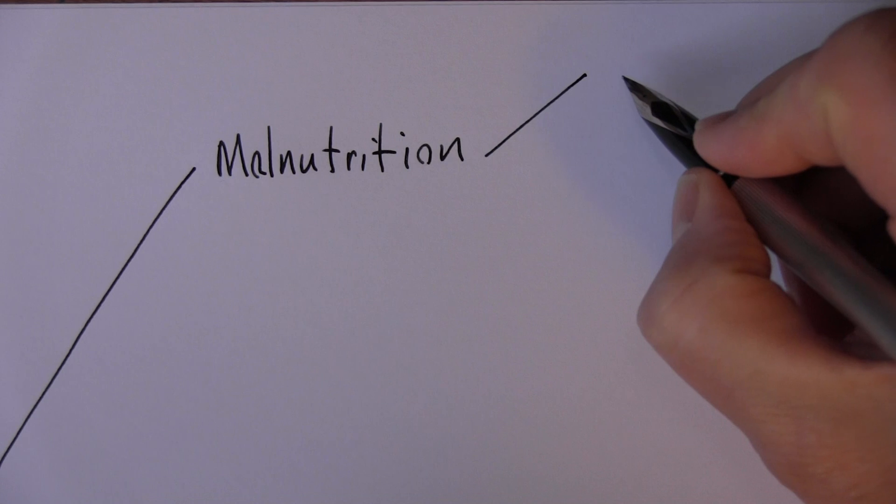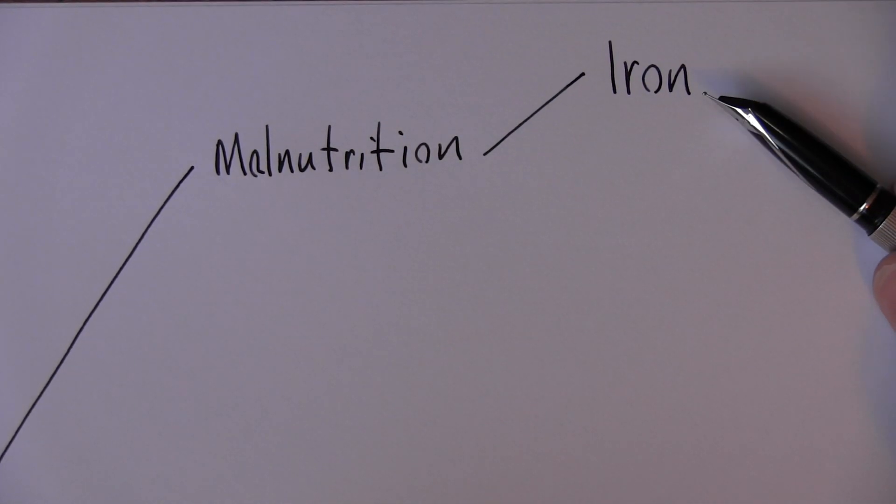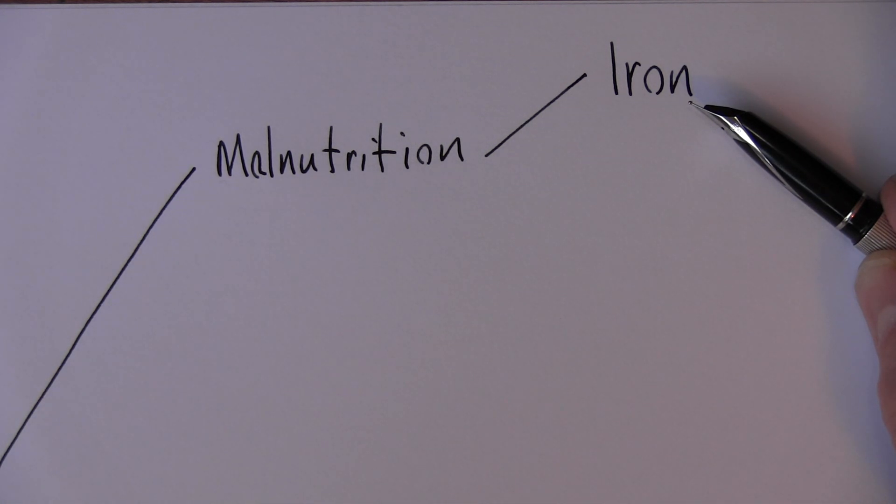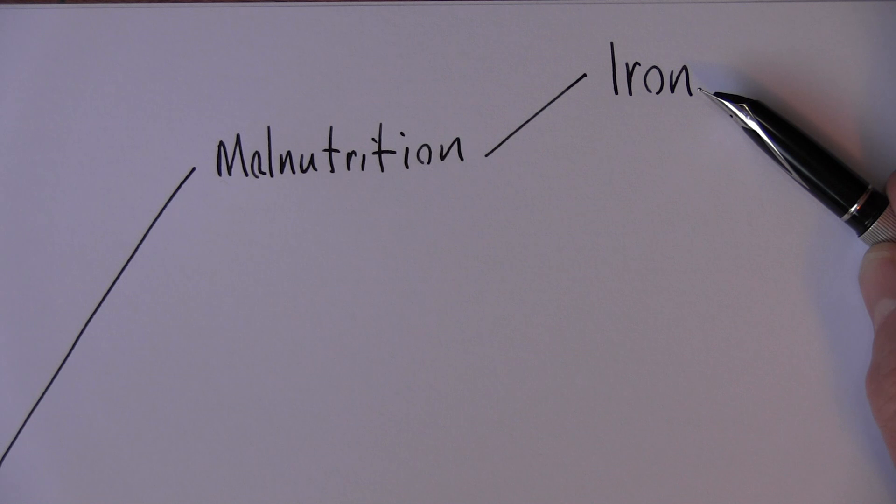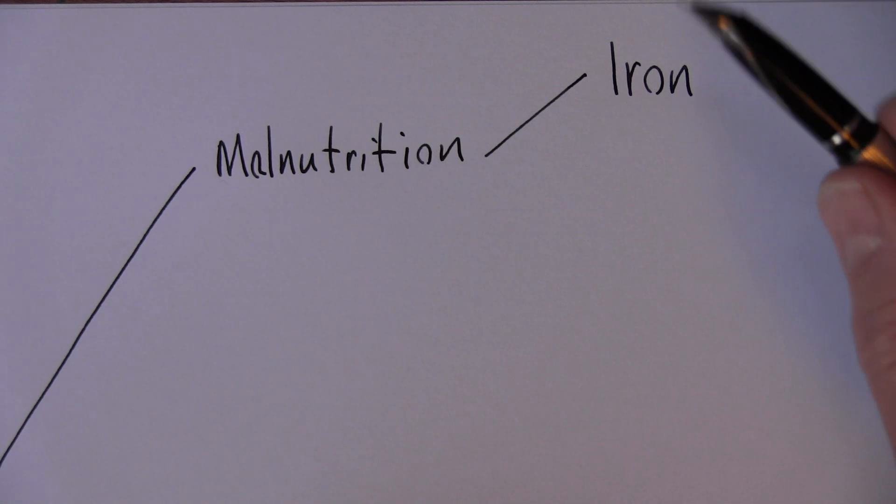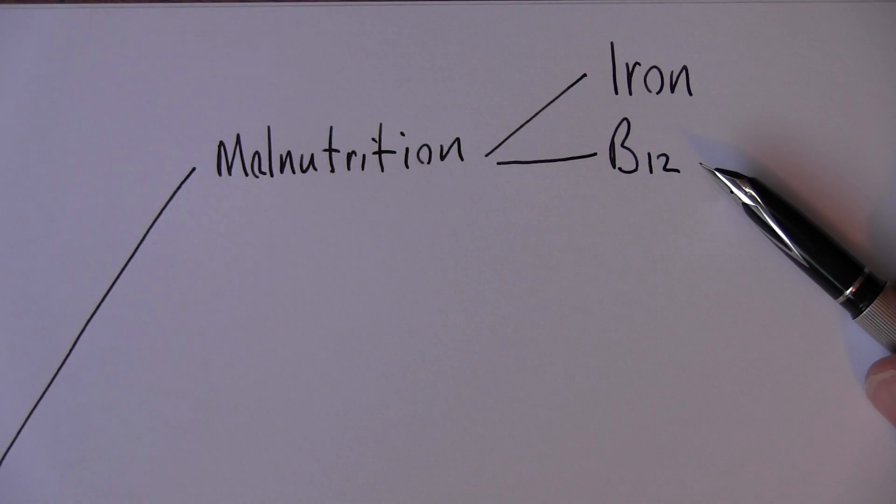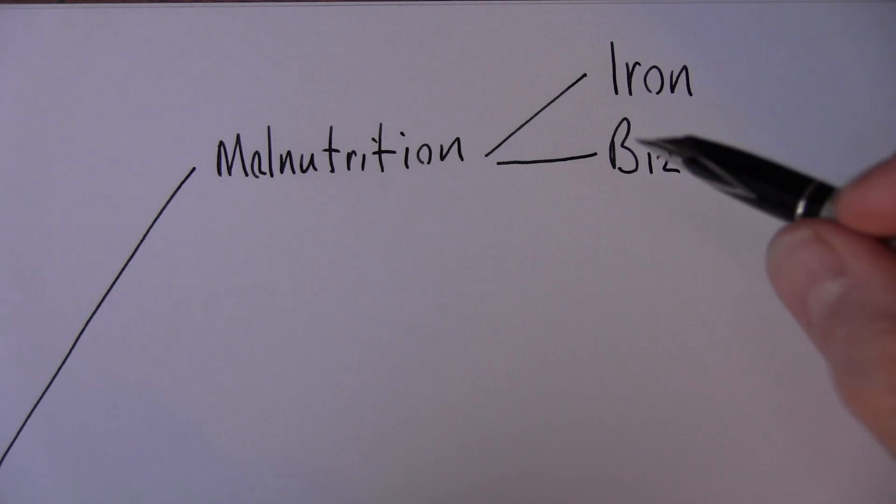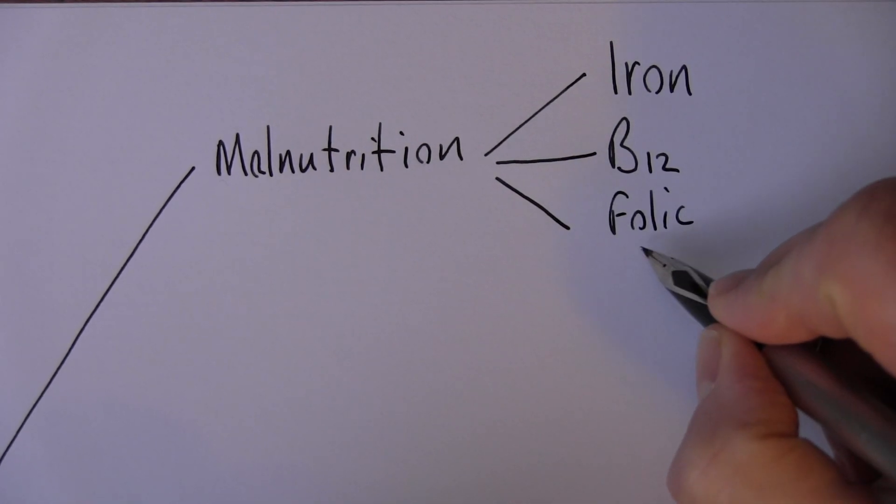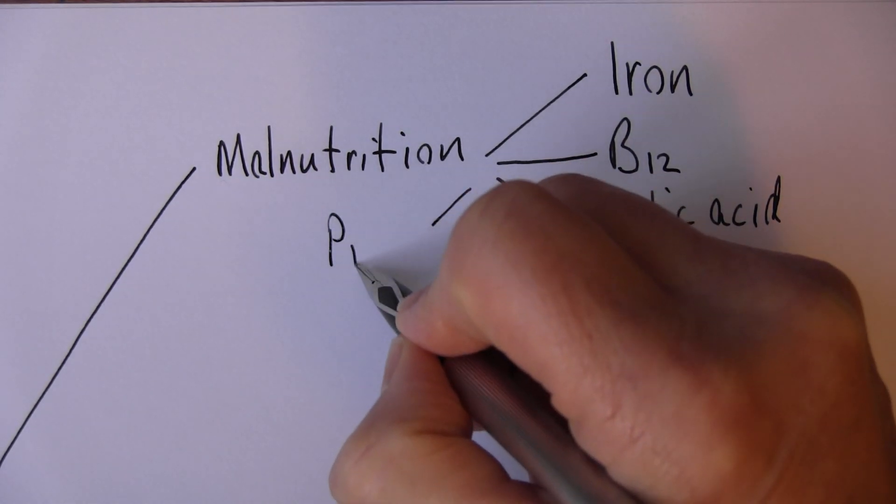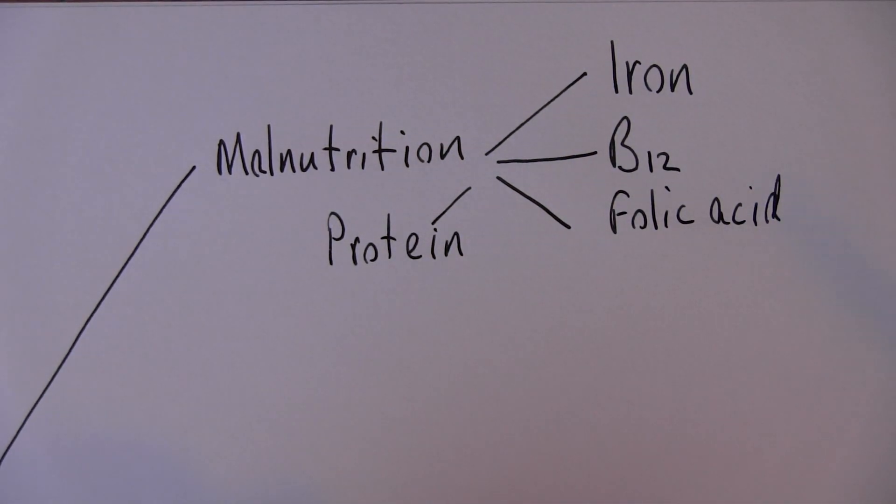The one that comes to mind straight away of course is iron. The center of every hemoglobin molecule is iron. Iron deficiency anemia is by far and away the most common form of anemia in the world. We need enough iron in the diet to produce the red blood cells because the hemoglobin molecules depend on iron. The other one that springs to mind is B12, vitamin B12, which is absolutely essential for red cell production in the bone marrow, as indeed is folic acid. And of course protein is also necessary. The hemoglobin is a protein, so it needs protein and it needs iron.